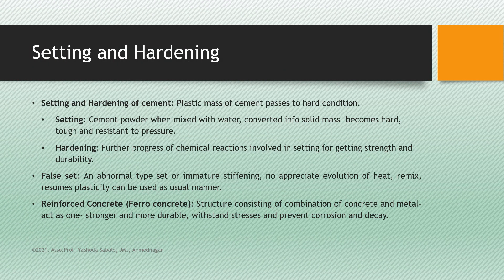Setting and hardening of cement: at the time of use, water is added to the cement and it is converted into a solid mass that becomes hard, tough, and resistant to pressure — this process is known as setting of cement. An abnormal type of set or immature stiffening with no appreciable heat involved is known as false set. If the mixture is remixed without addition of water, it resumes its plasticity and can be used normally. Hardening is the further progression of chemical reactions involved in setting for gaining strength and durability, taking up to 2 years for complete hardening.